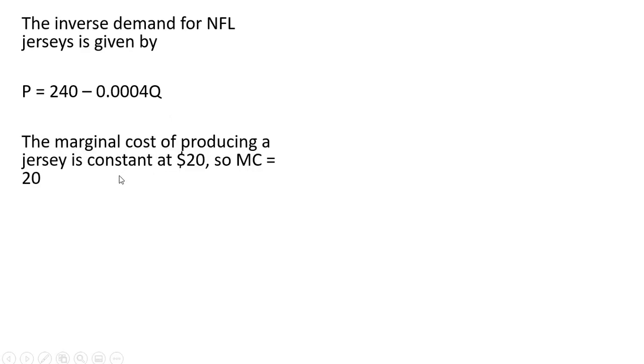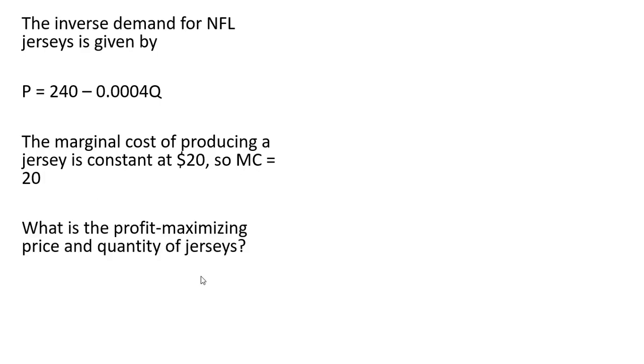The marginal cost of producing a jersey is constant at $20 — so MC, marginal cost, equals 20. We want to solve for the profit-maximizing price and quantity of jerseys.